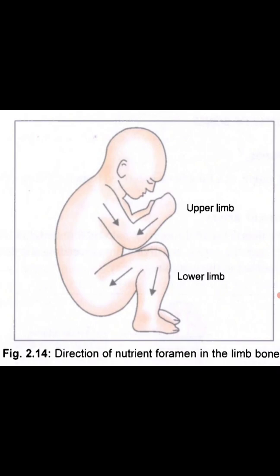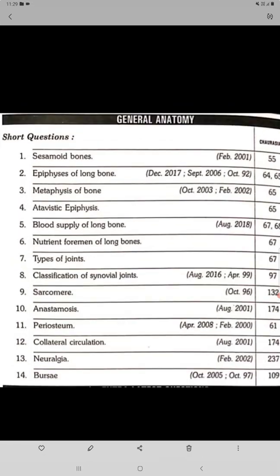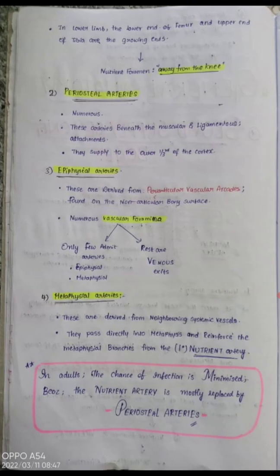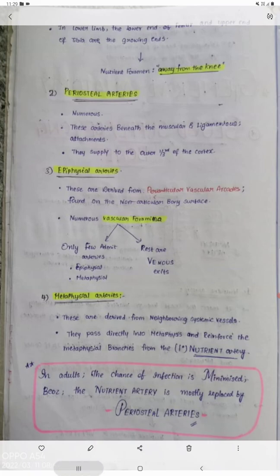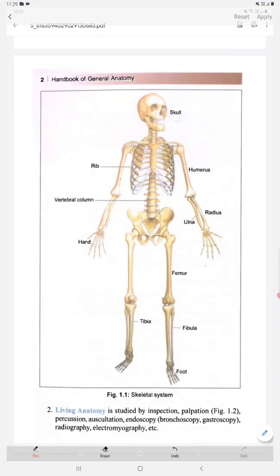In the lower limb, the arrows are showing away from the knee joint. The growing ends in the lower limb are the lower end of the femur and the upper end of the tibia, so the nutrient foramen will be away from the knee. You can remember this with the mnemonic: 'flee from the knee' — flee means away from the knee. This is the adult skeleton.